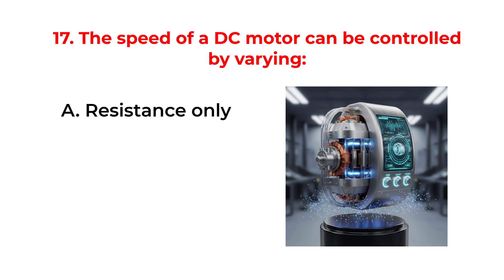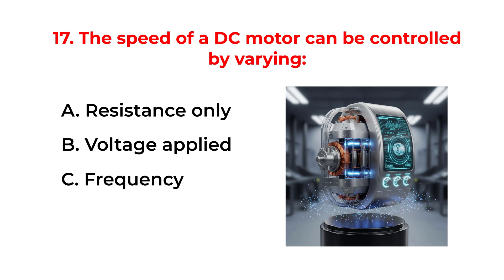The speed of a DC motor can be controlled by varying: A. Resistance only. B. Voltage applied. C. Frequency. D. Capacitance.